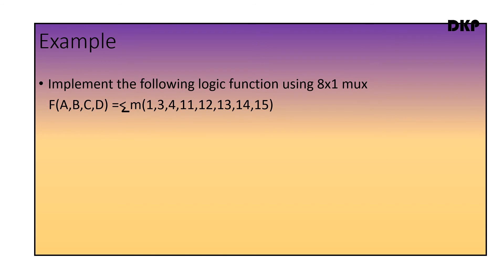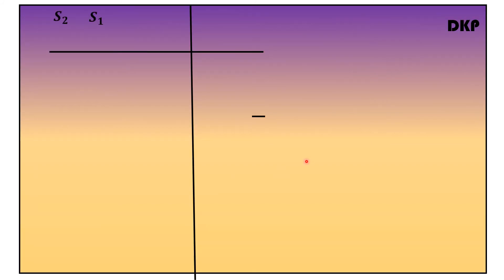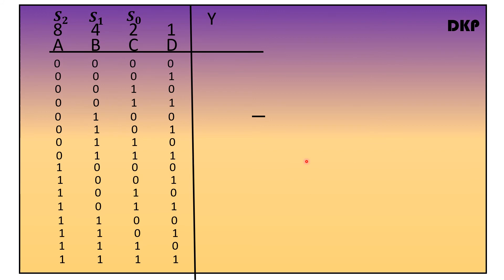Let us do an example based on this. Implement the following logic function using an 8-to-1 multiplexer: F(A,B,C,D) = ΣM(1, 3, 4, 11, 12, 13, 14, 15). Now let us write the function table. The select lines are S0, S1, S2, and four variables A, B, C, D are being used. Therefore 2 to the power of 4 gives 16 combinations of 0s and 1s as input.